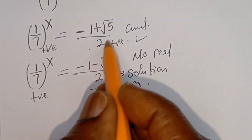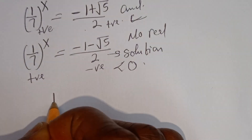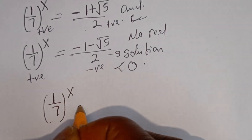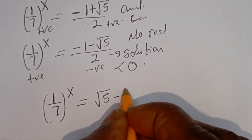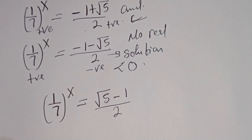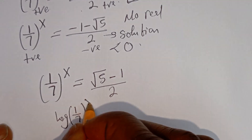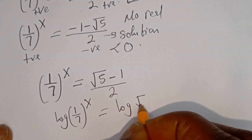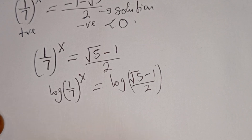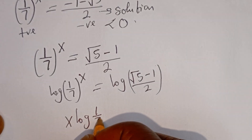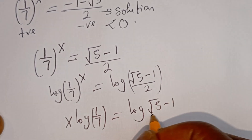Therefore, we have 1 over 7 to the power of X is equal to negative 1 plus square root of 5 over 2, which can be written as square root of 5 minus 1 over 2. Now let's take the log of both sides: log of 1 over 7 to the power of S equals log of square root of 5 minus 1 over 2. This gives S times log of 1 over 7 equals log of square root of 5 minus 1 over 2.